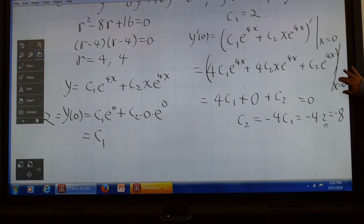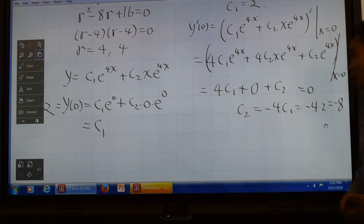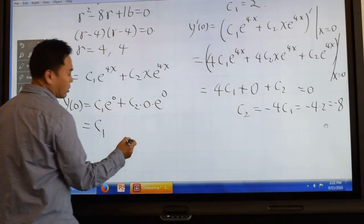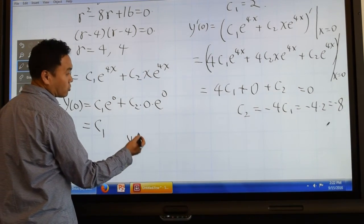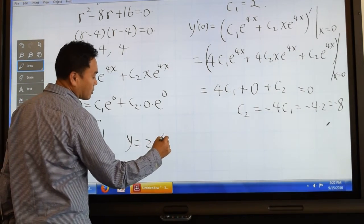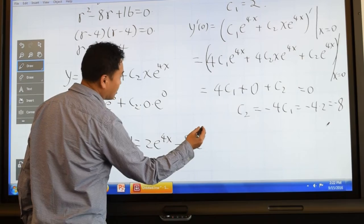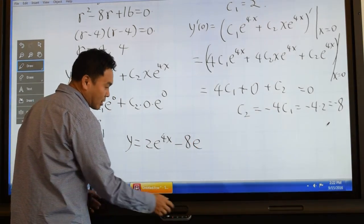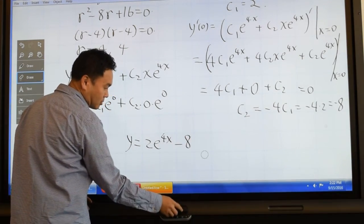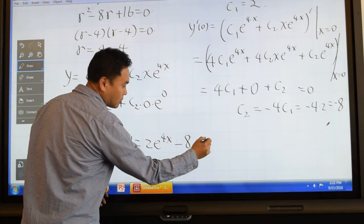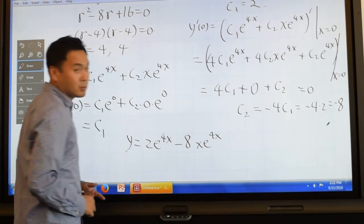So we did get c1 and c2, and then you have to plug that back in here, so you get y equals 2 times e to the 4x, and then minus 8, no sorry, x times e to the 4x. Okay?